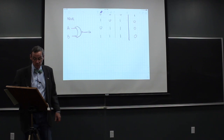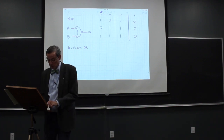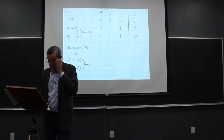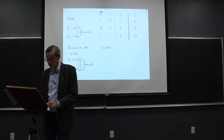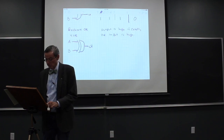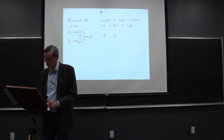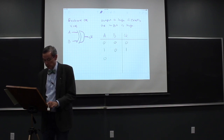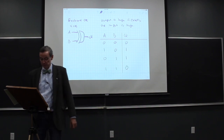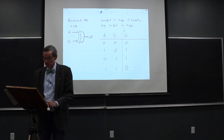There's one other type of OR called the exclusive OR, or XOR. Its symbol looks like the OR but with an extra curved line. The output is high if exactly one input is high. Truth table: A=0, B=0 gives Q=0; A=1, B=0 gives Q=1; A=0, B=1 gives Q=1; A=1, B=1 gives Q=0 because two inputs are high. There's also an XNOR (exclusive NOR), which is the complement: one, zero, zero, one.